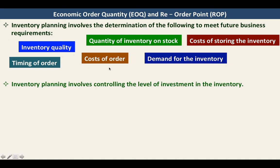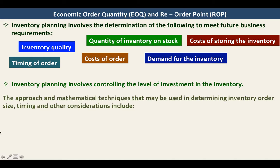These are the things that we have to consider in inventory planning, because inventory planning involves controlling the level of investment in inventory. We need to know how much investment we are going to put in our inventory. So we have to have certain techniques. The approach and mathematical techniques that may be used in determining inventory order size, timing, and other considerations include the following.